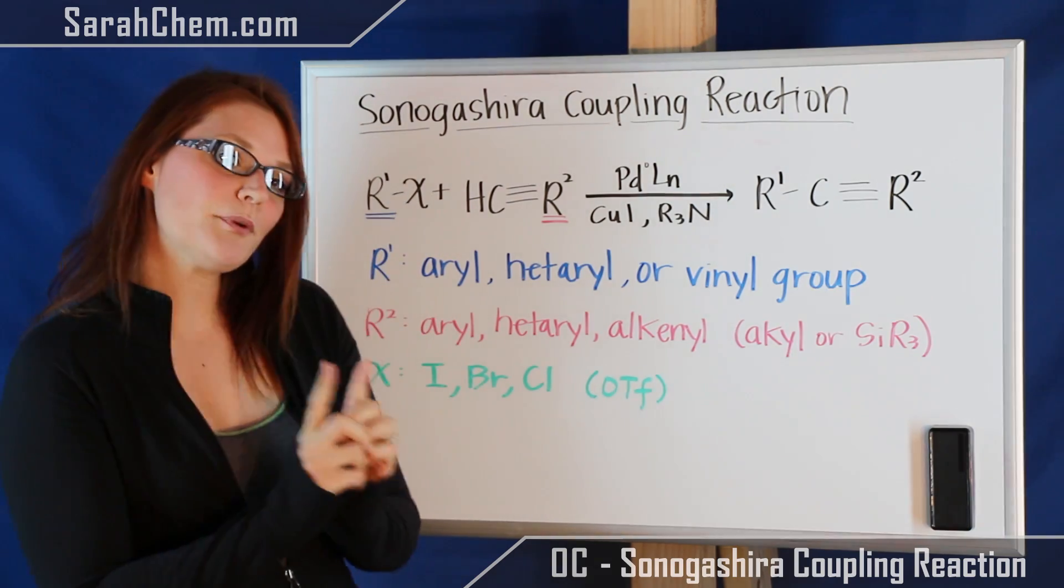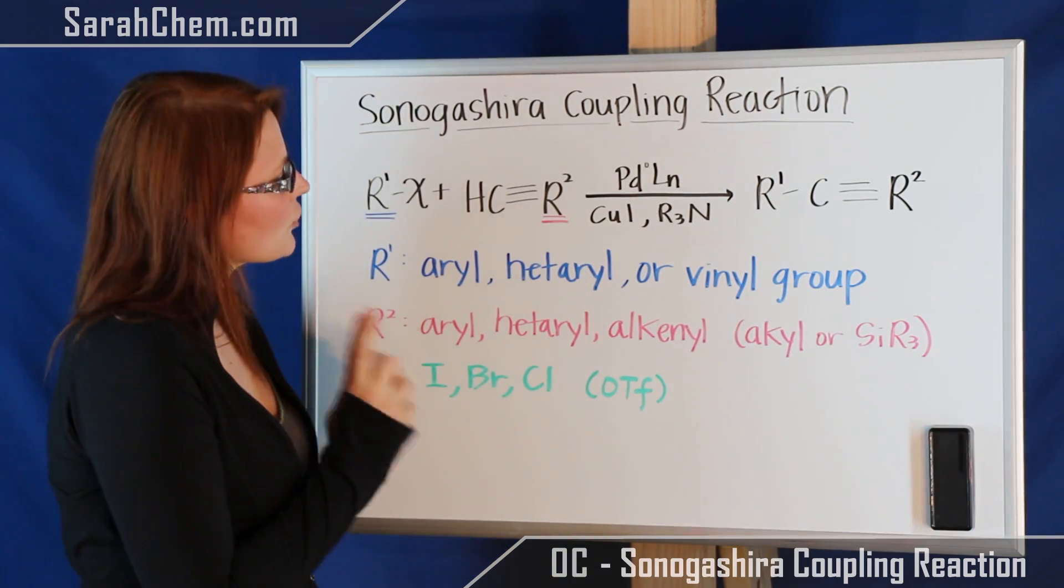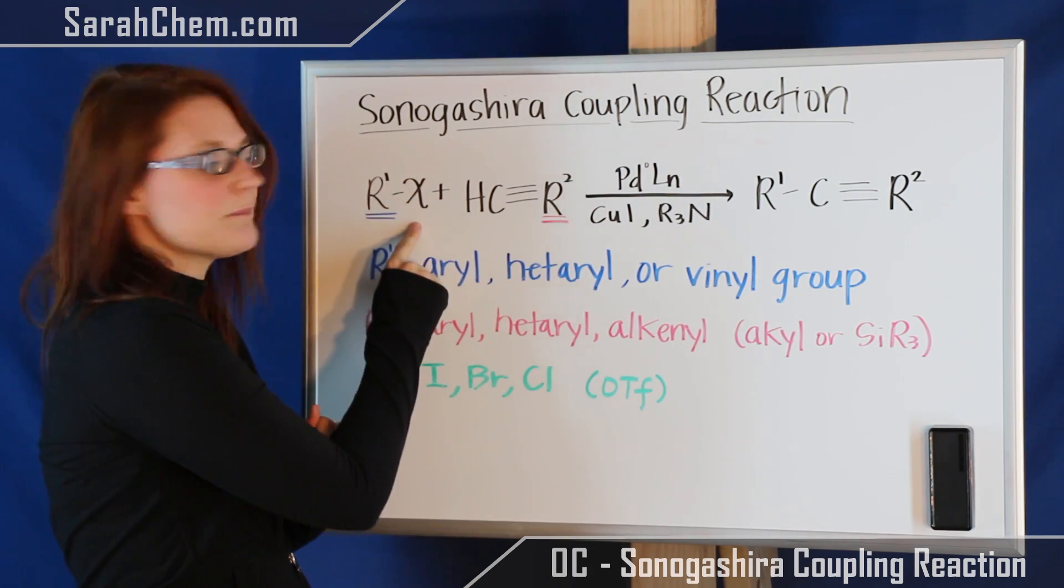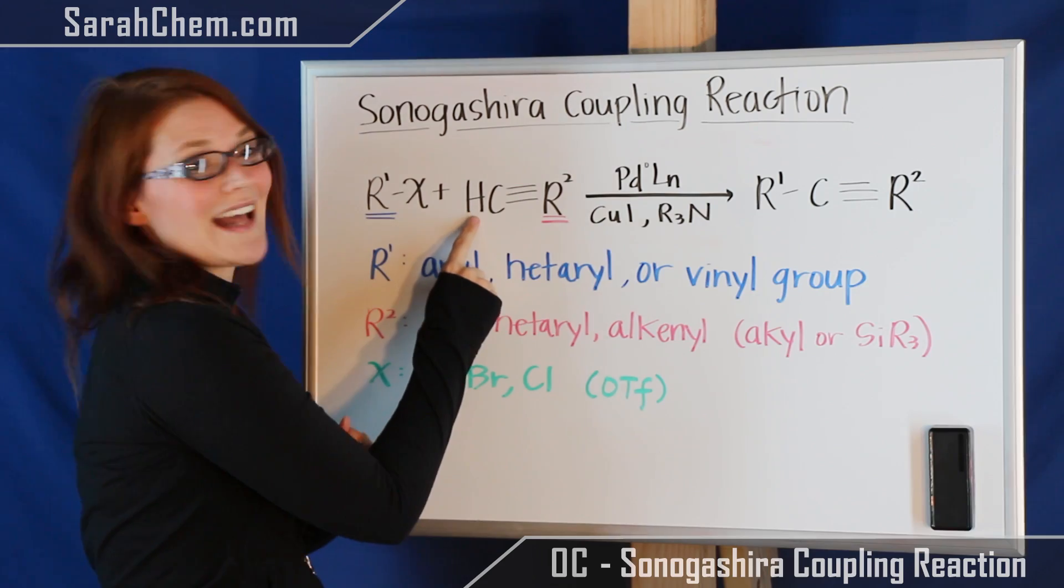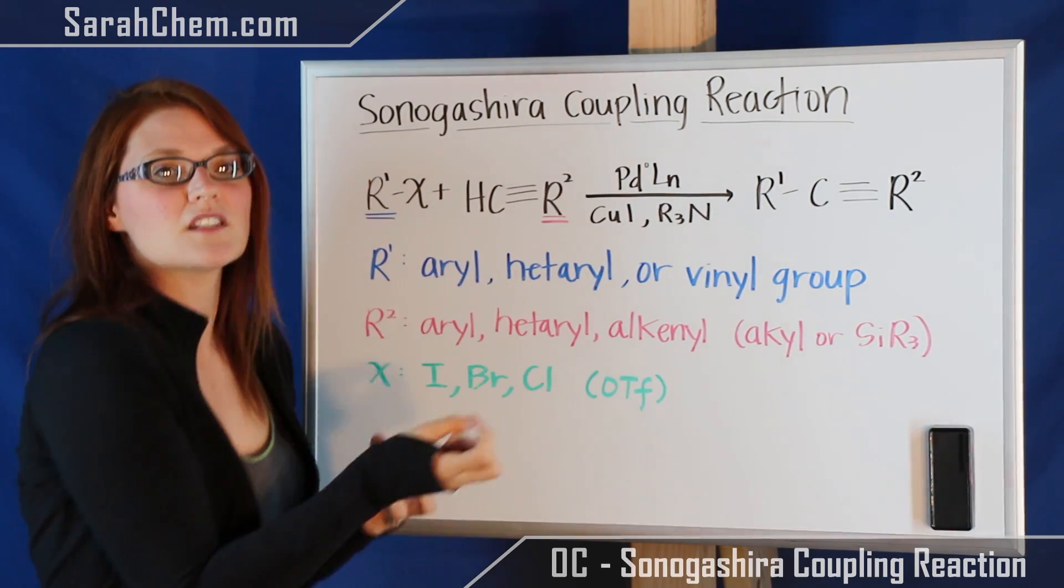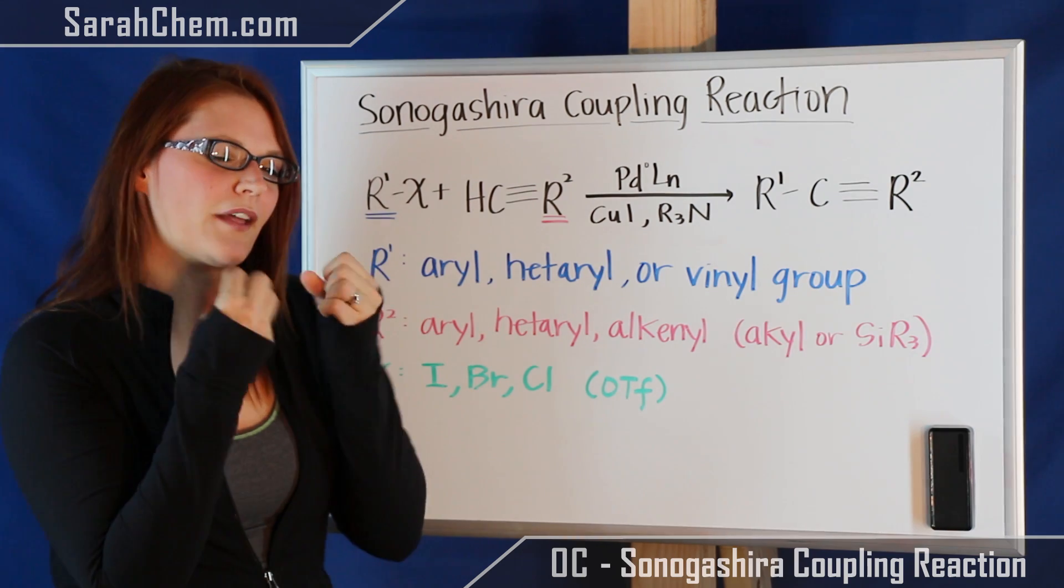Now if you're predicting product, what you'll do is essentially we're going to have this group here. It's going to lose the X and this group here is going to lose that H which is why the base actually becomes really important because it's going to be able to be part of the reaction to pull that hydrogen off.